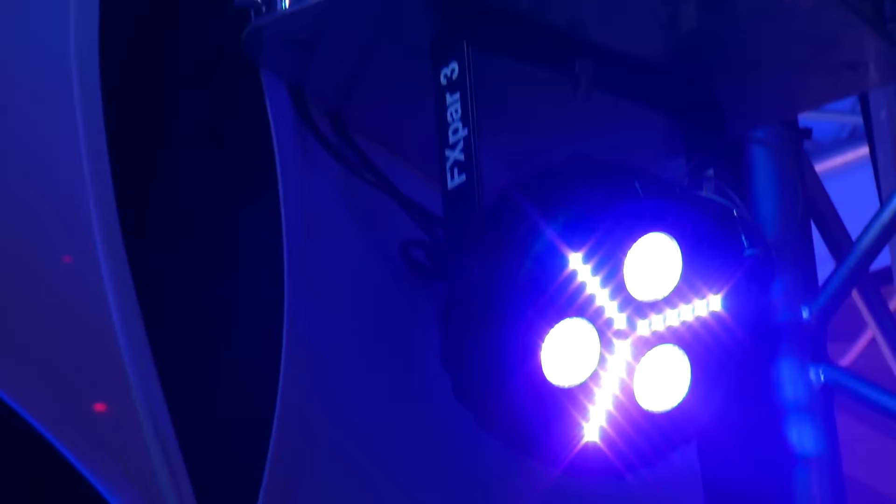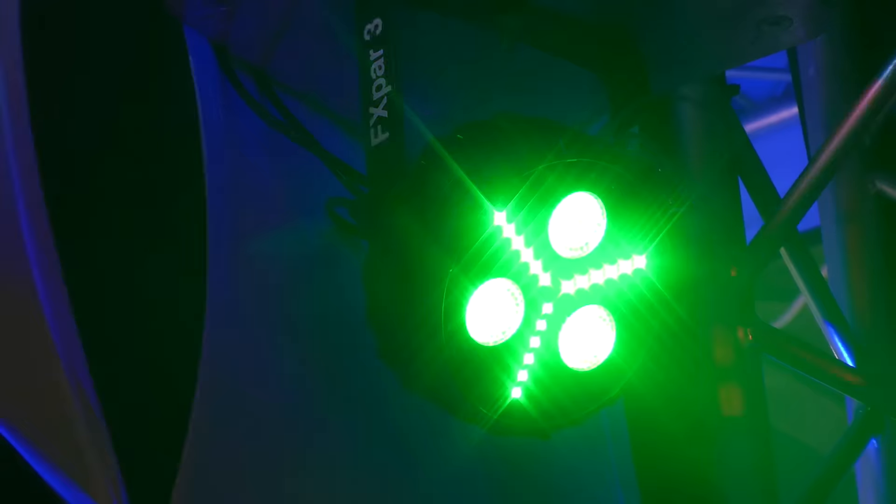And then the next fixture here is the FX Par 3. On the outside you have white SMD strobes so that's your strobe light. You also have RGB SMDs, that's your colored strobe and FX and then in addition to that you have a red, green, blue UV wash as well.